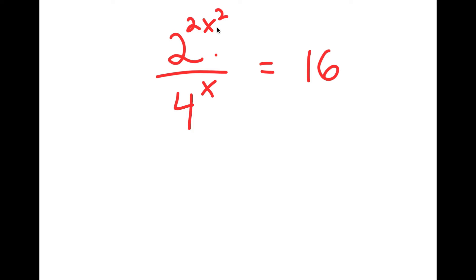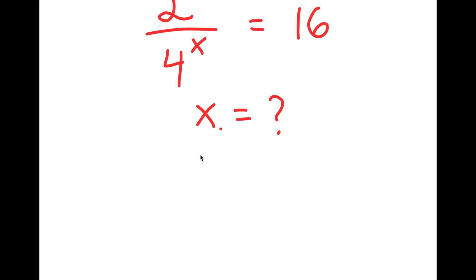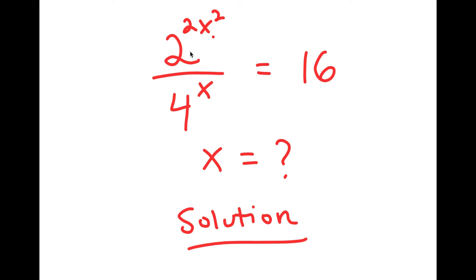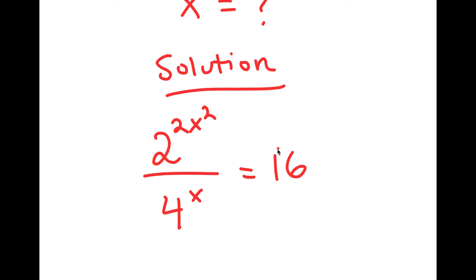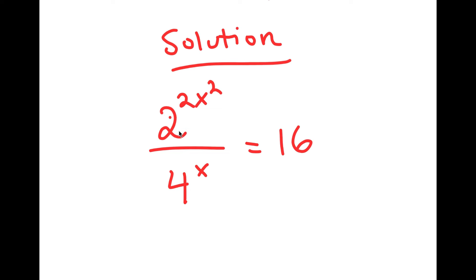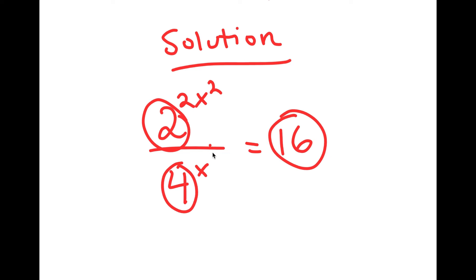My only variable in this equation is x, so that's the variable I'm going to be solving for. What I'm going to do is rewrite this equation down here so I have a little more solving space. The simplest method of solving this problem is to make all of these terms the same base. Right now we have a base of 2, a base of 4, and a base of 16, and we can make all these bases the same by making them all bases of 2.